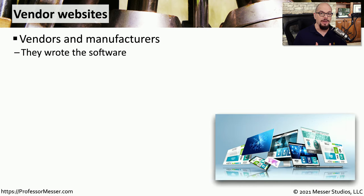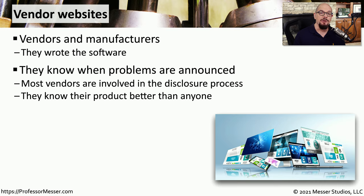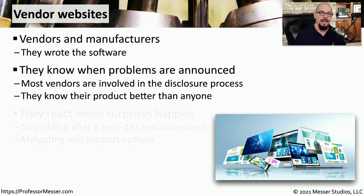If you're interested in knowing the threats associated with an operating system or an application, you should start with the companies that wrote them. Those vendors know their products better than anyone else, and they're often the first to know about vulnerabilities. There's usually a page on a vendor's website where they keep track of all known vulnerabilities, and usually some type of notification process so they can inform you immediately when a new vulnerability is discovered.